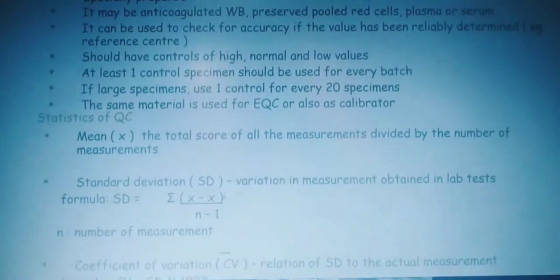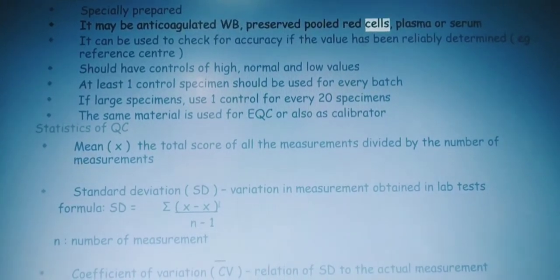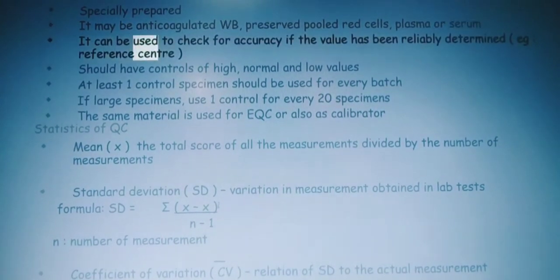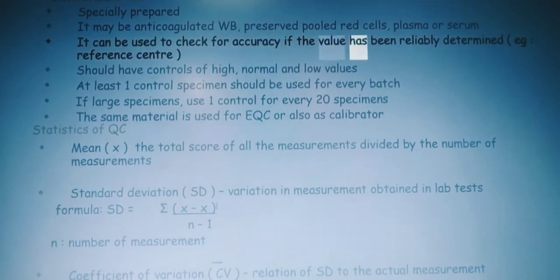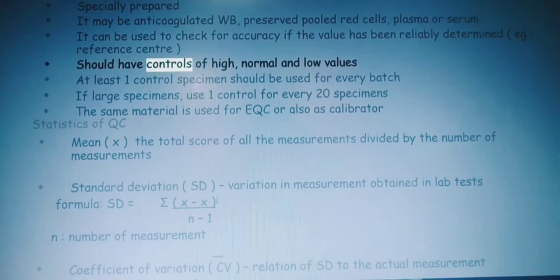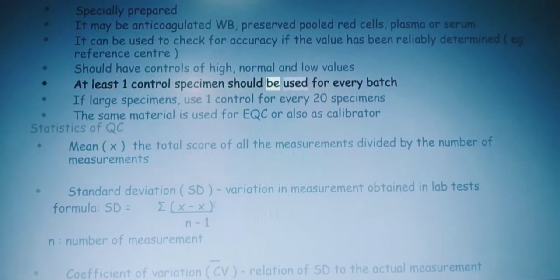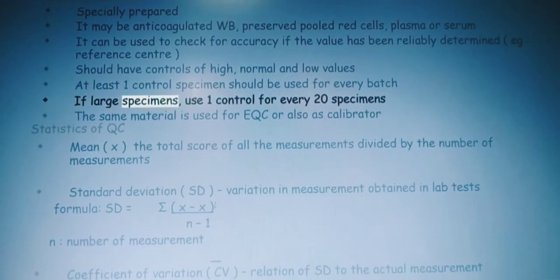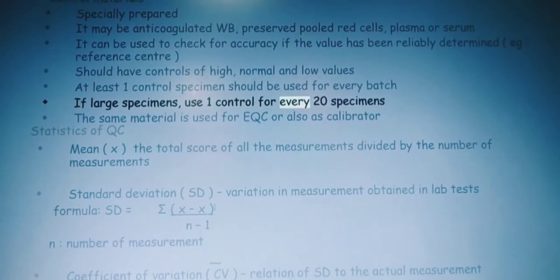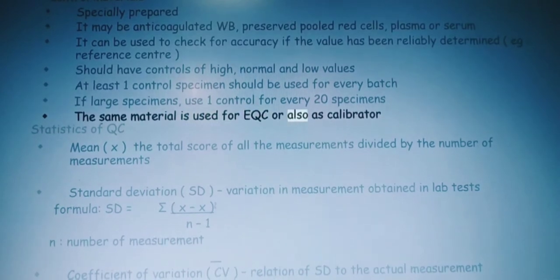Control materials: specially prepared, it may be anticoagulated whole blood, preserved pooled red cells, plasma, or serum. It can be used to check for accuracy if the value has been reliably determined, e.g., reference center. Should have controls of high, normal, and low values. At least one control specimen should be used for every batch. If large specimens, use one control for every 20 specimens. The same material is used for EQC or also as calibrator.